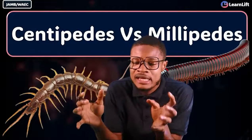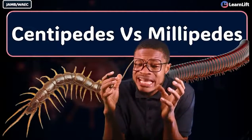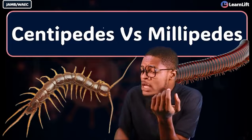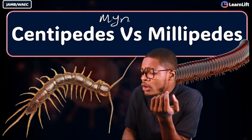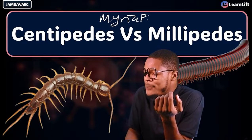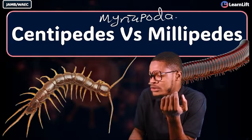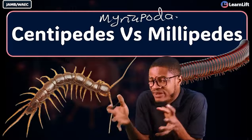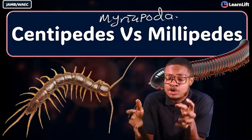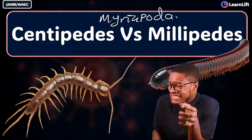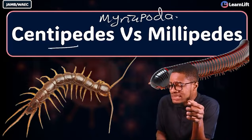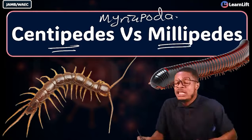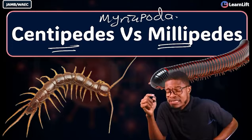We're going to be looking at centipedes versus millipedes. Together they form the Myriapoda — your myriapods — which are divided into two groups: the Chilopoda, which are the centipedes, and the Diplopoda, which are the millipedes. This is lesson 17.